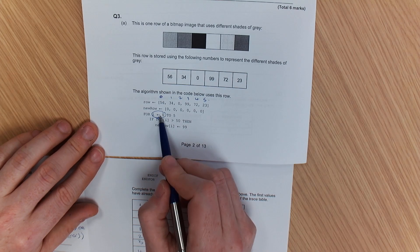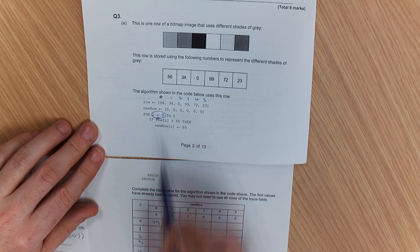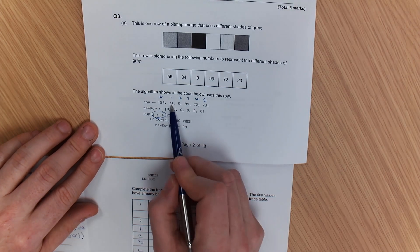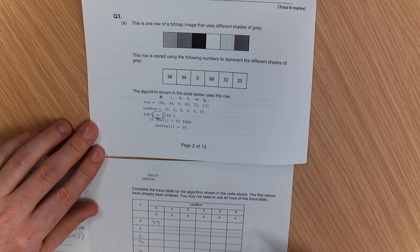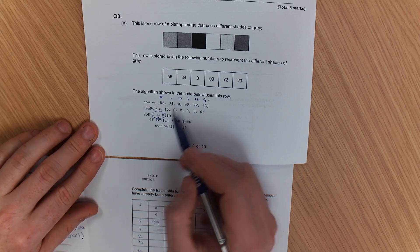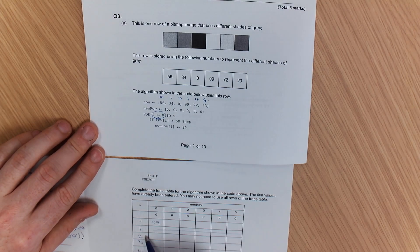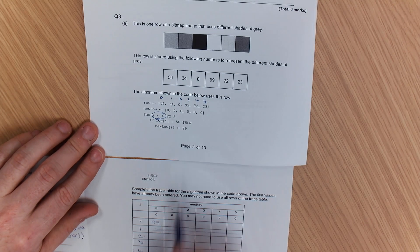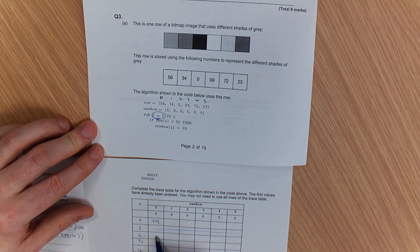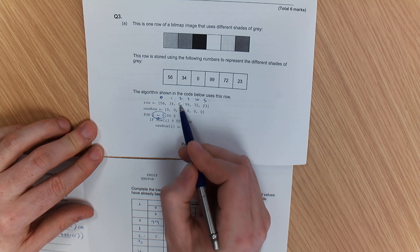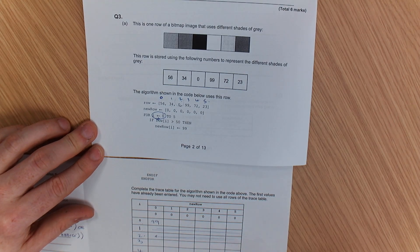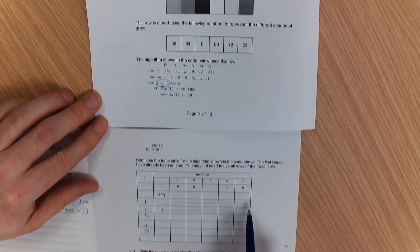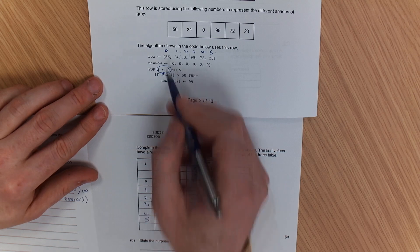So on the second time around, when it went up to 1, was 34 greater than 50? So nothing happened there. Third time around, when i was up to number 2, was 0 greater than 50? Are you sure about that? Value 2, it's 0. So the second time around, again, we've done nothing there. Don't scribble on this, by the way. This is just me trying to help you figure it out. Now, when that's gone up to 3, the value's 99.